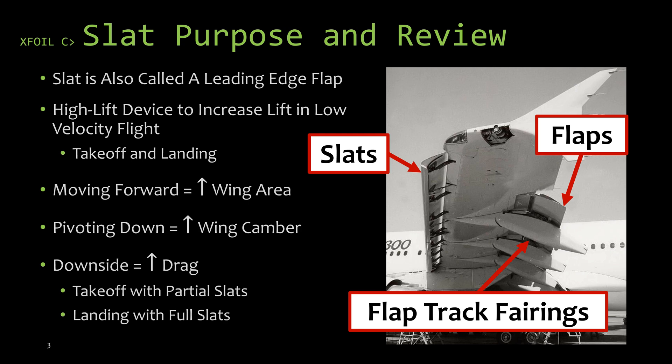For this reason, like flaps, a lot of times you'll land with full slats but you might take off with partial slats. And when you're up cruising, you're going to have no slats, trying to get rid of that drag and be efficient.